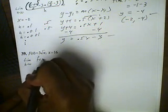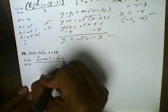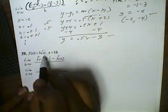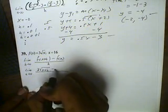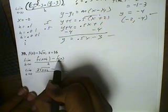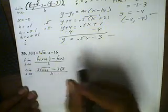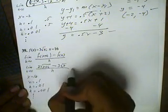For problem 39, same conditions. We want to find the limit as H approaches 0 of F of X plus H minus F of X, all over H. Everywhere we see an X, we're going to put in X plus H. So instead of 3 square root of X, this will be 3 square root of X plus H, minus F of X which is 3 square root of X, all over H. The X is 16, and I'm going to choose H to be 0.1, then 0.01, then 0.001. I'll keep this pattern up until I can find the slope.